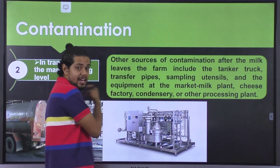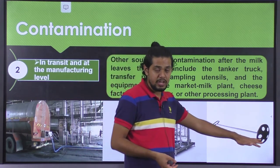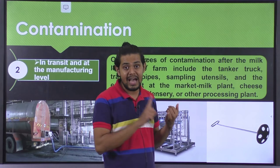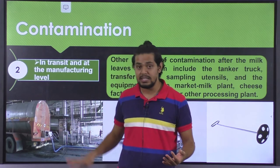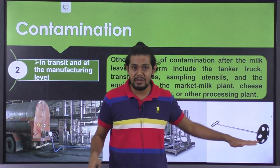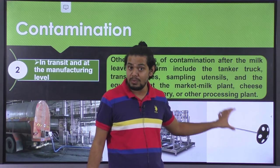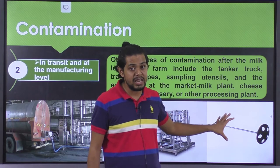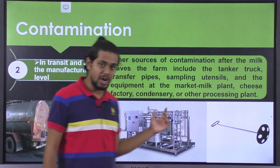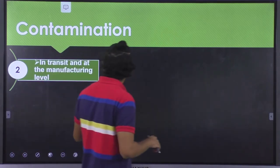Whatever equipment is used for sampling purposes, such as the plunger used in the dairy industry for mixing in cans and tankers, if such mixing or sampling equipment is not properly cleaned, it will significantly increase the microorganism count in the fluid milk. These are the important sources of contamination as far as milk is concerned.